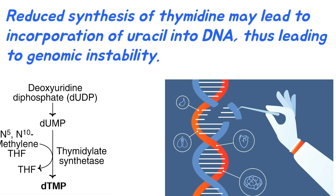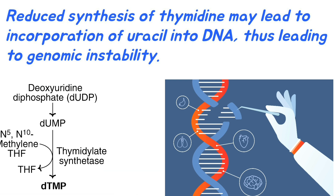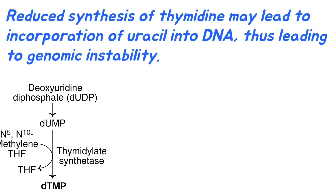Genomic instability may result from uracil incorporation into DNA as a result of decreased thymidine synthesis. During the synthesis of thymidine from deoxyuridine monophosphate, the enzyme thymidylate synthetase requires tetrahydrofolate as the coenzyme. So when there is folate deficiency, it affects the synthesis of thymidine.